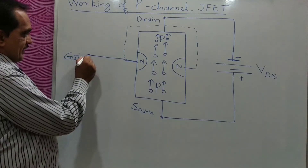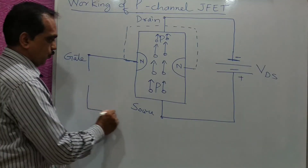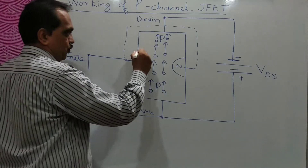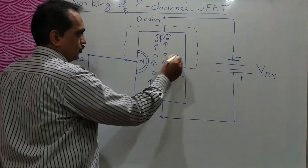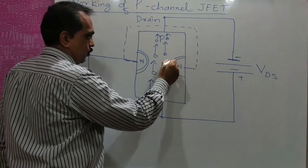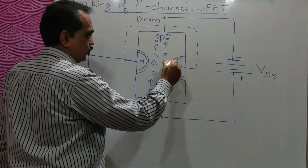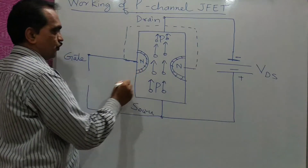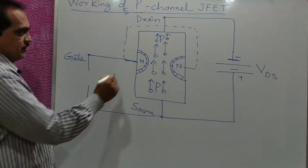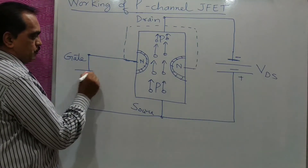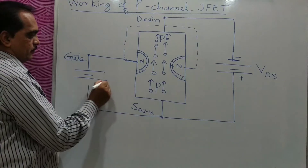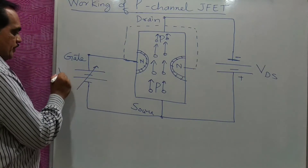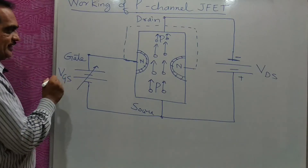Similarly, the voltage between gate and source — VGS — should be such that the depletion region goes on increasing. So you should have a reverse bias voltage here. For reverse bias, the n-type gate should be connected to the positive of a variable battery. This is your voltage between gate and source.